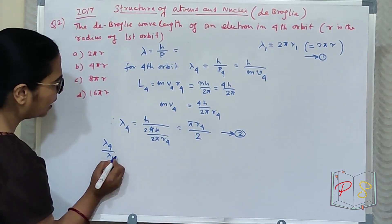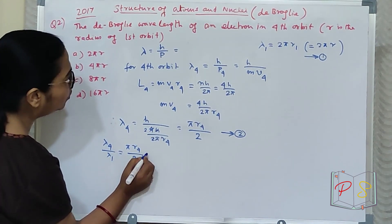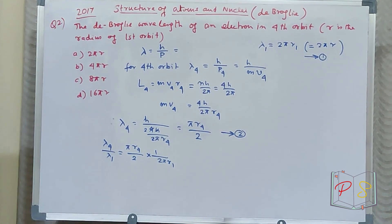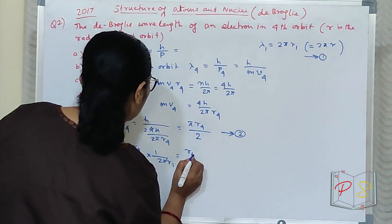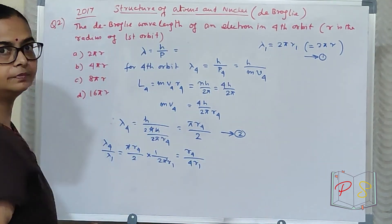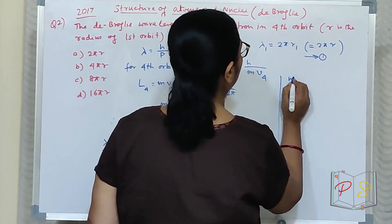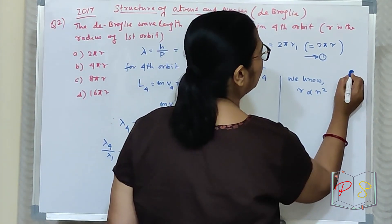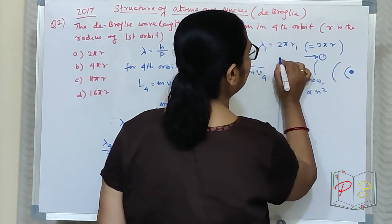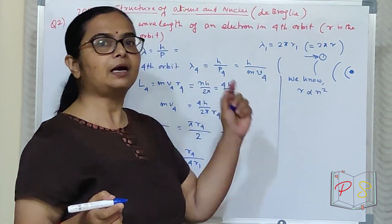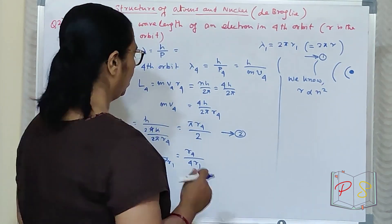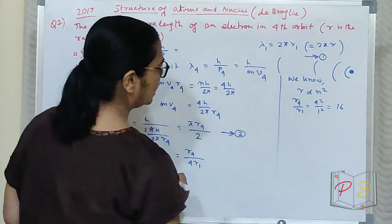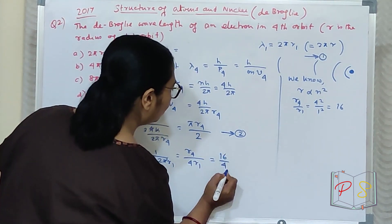So lambda₄/lambda₁ if we do, then πr₄/2 × 1/2πr₁. So what remains? π cancels, remains r₄/4r₁. Now one thing we know: r is proportional to n². Don't forget this. Small steps come here, then here, then here. There's a big gap. The value of r changes with n². So r₄/r₁ equals 4²/1² = 16. This equals 16. 16/4 = 4.